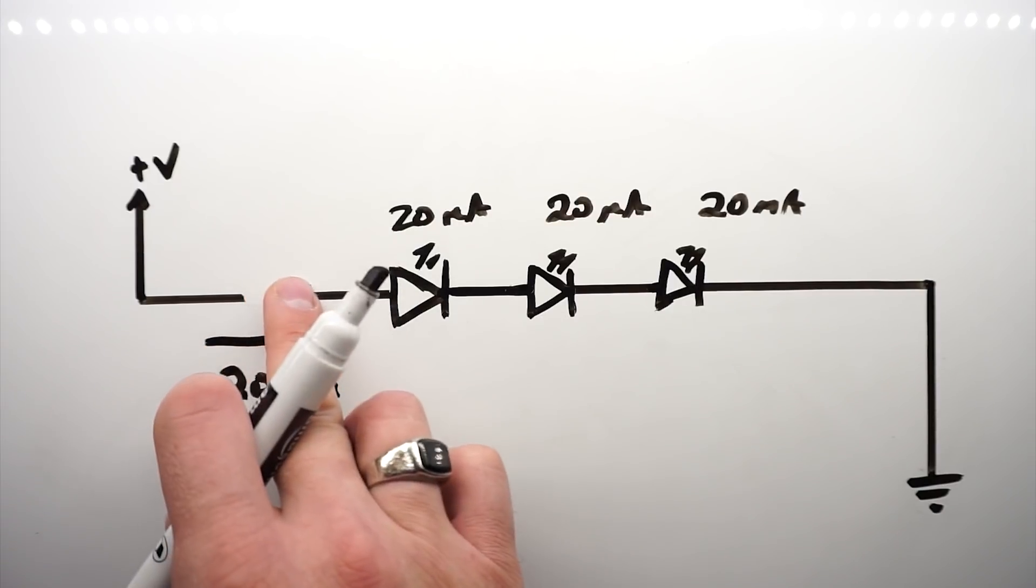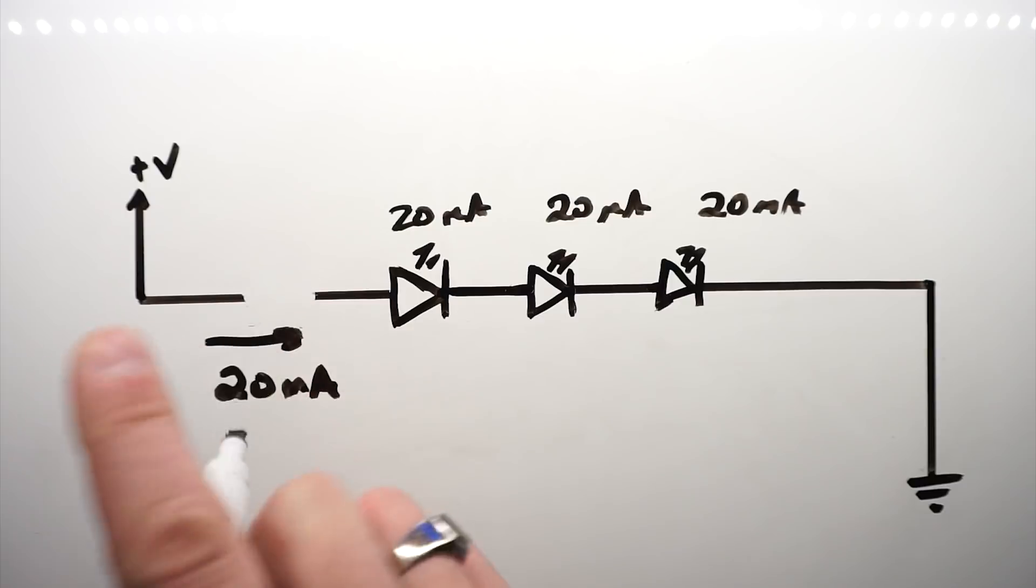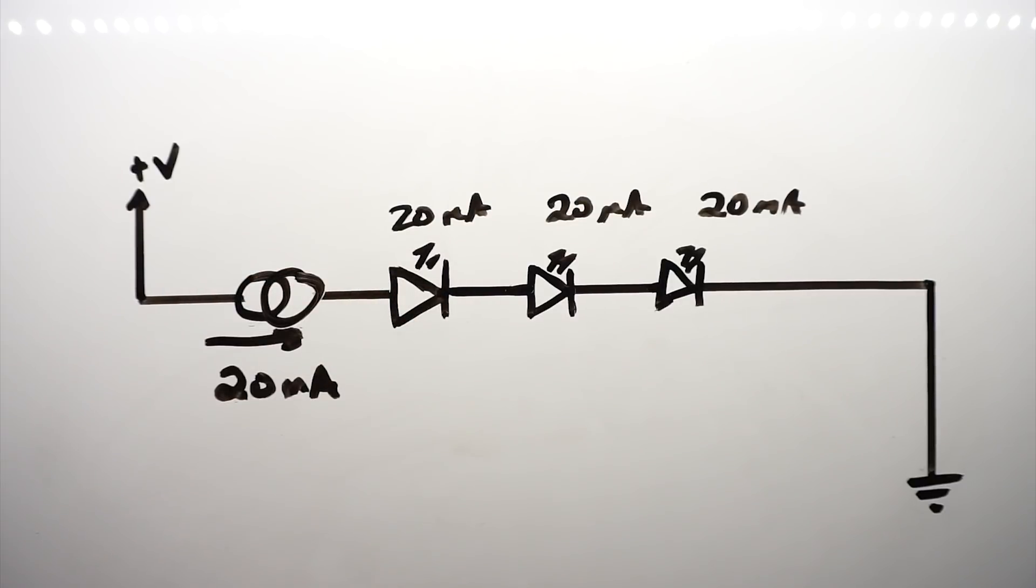And we can do that by replacing this resistor with a current source. And we can do that with this simple NPN transistor.